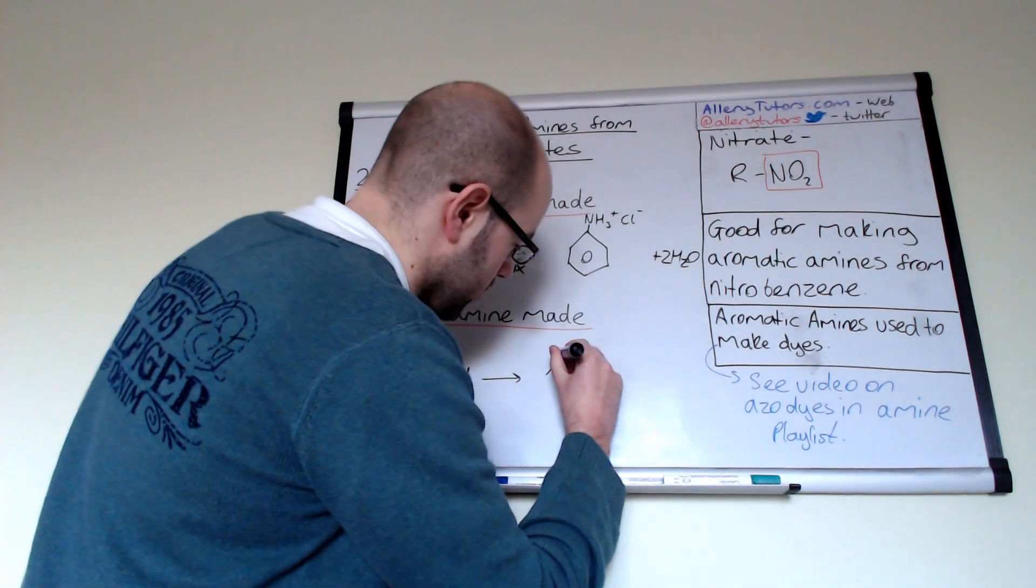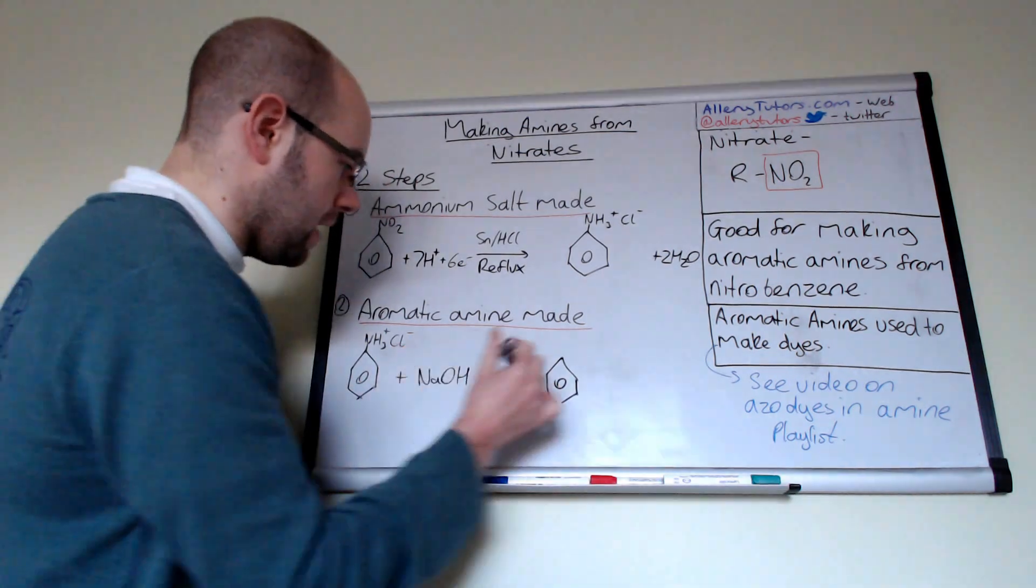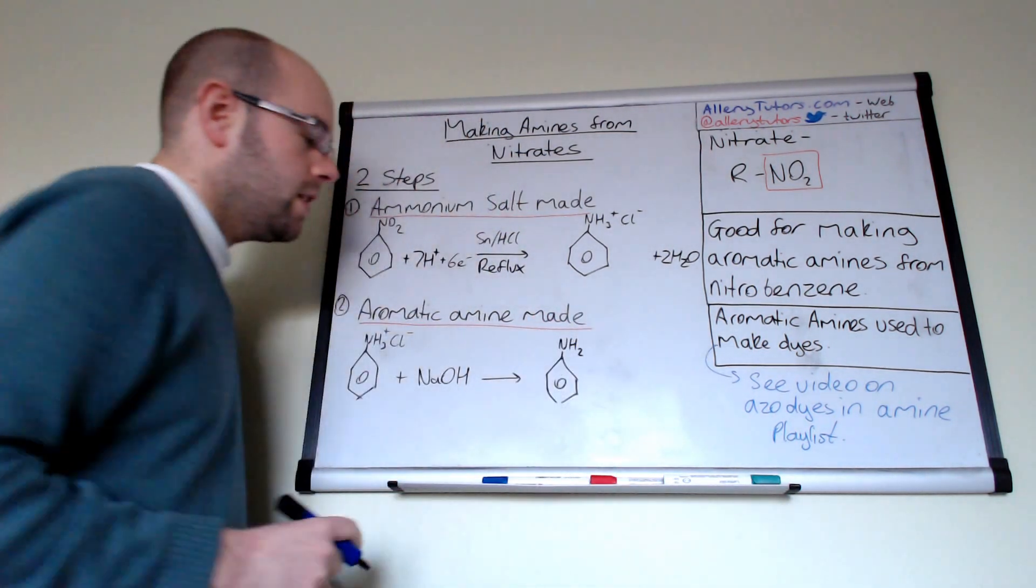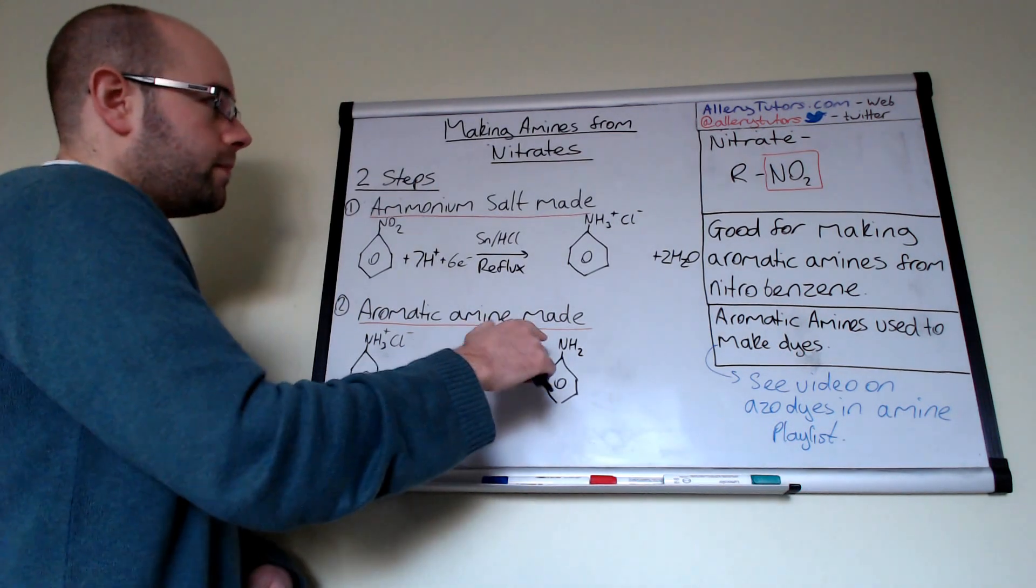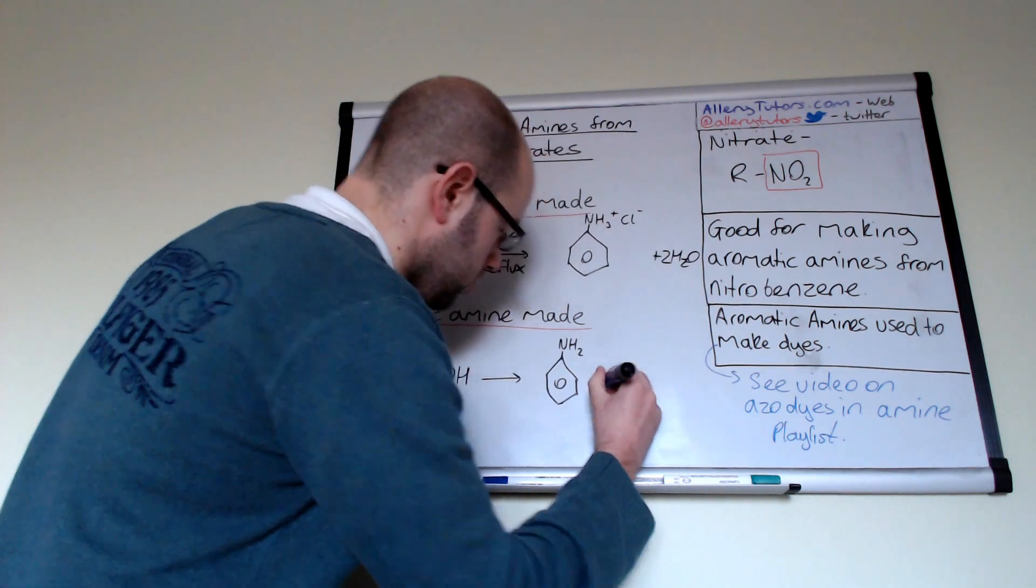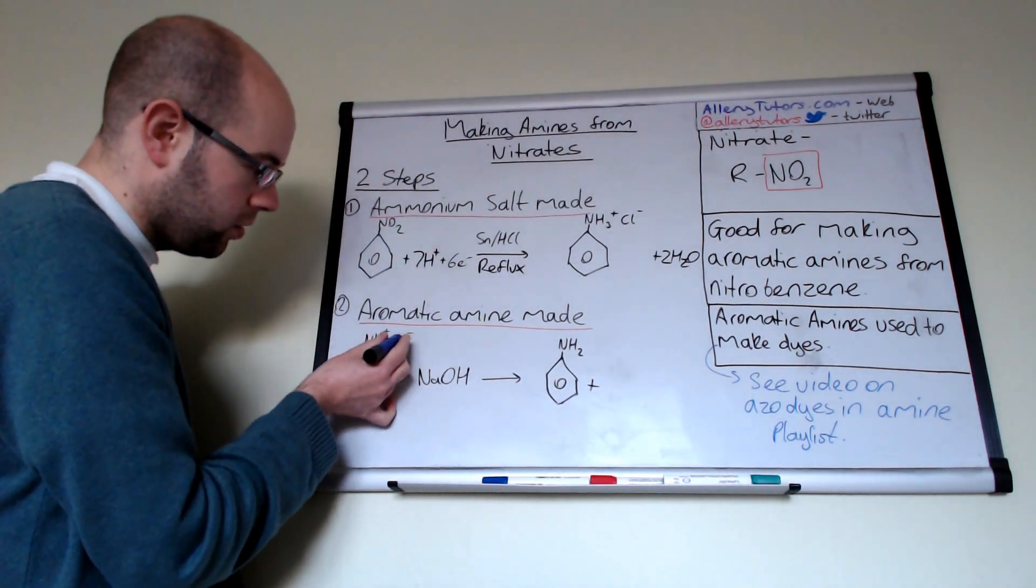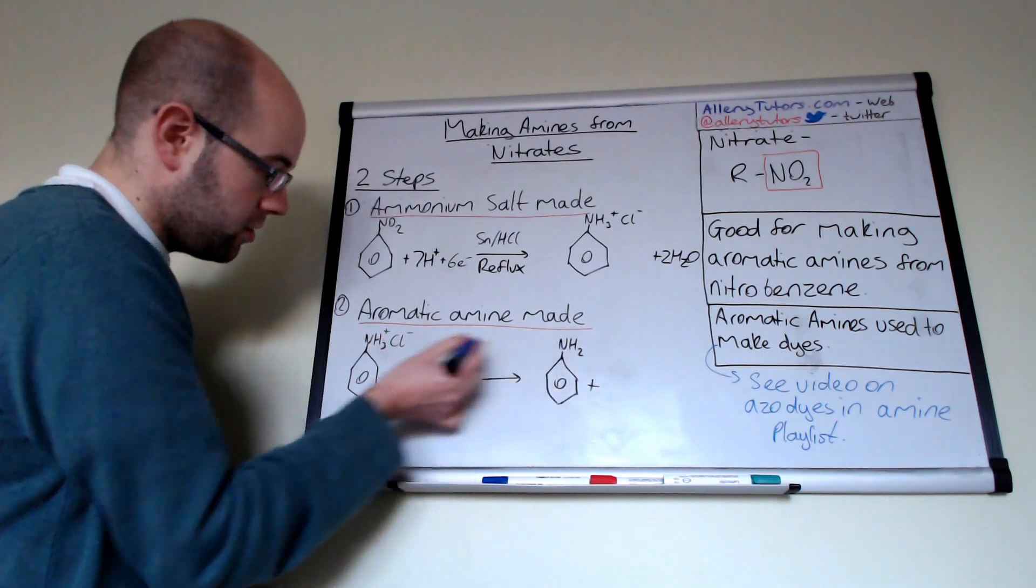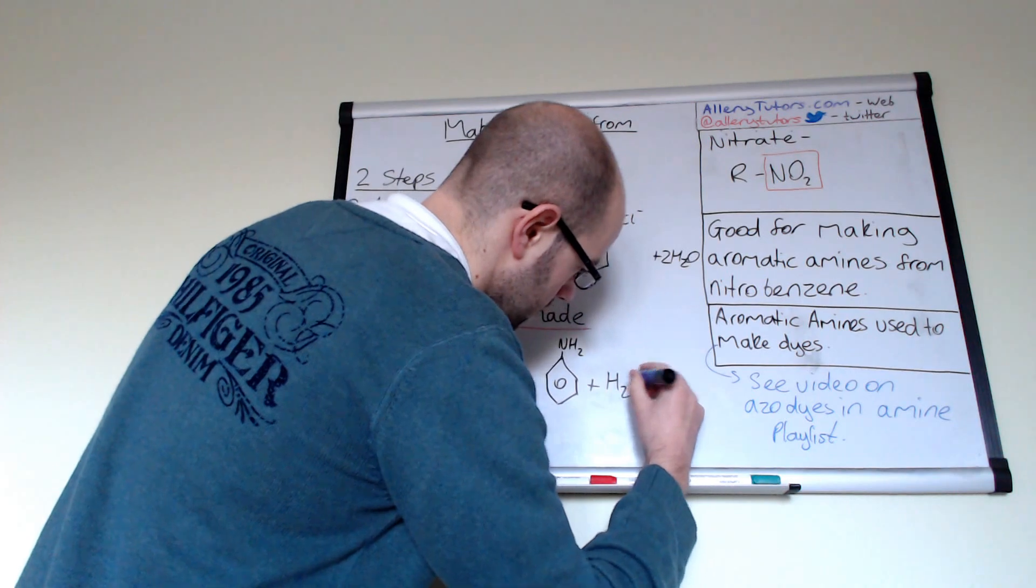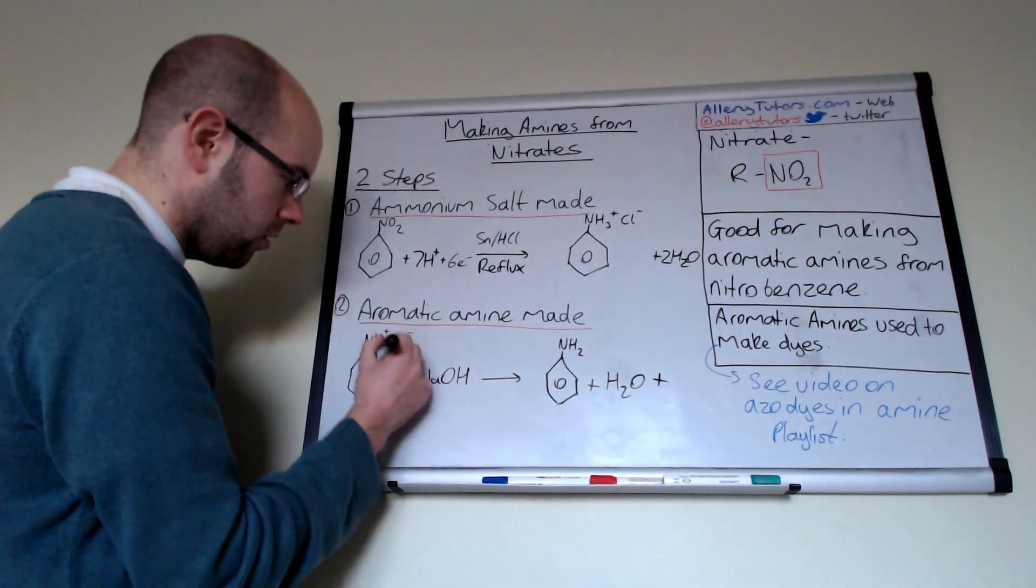So we're going to draw our product here. So we're going to form - there you go, that's our phenylamine, which is this molecule here. So there's our aromatic amine, and we're also going to produce, you can see we've got a hydrogen spare there and the chlorine. Now the hydrogen from here, because we've only got NH2, so the hydrogen from here will react with the OH to form water, and then you can see that we have a sodium that's left behind and a chlorine, so that will form sodium chloride.